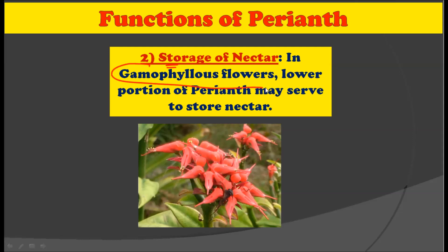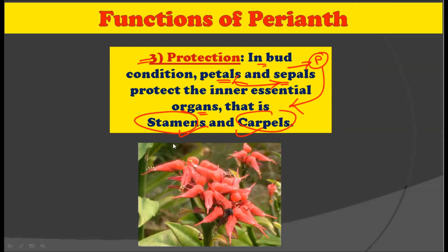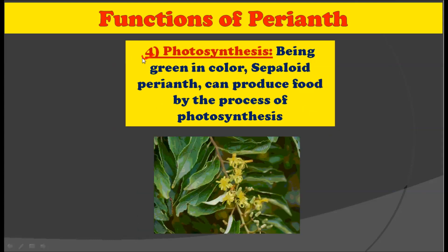The second function of the Perianth is storage of nectar. In gamophyllous flowers where the tepals are fused with each other, the lower part of the Perianth acts as a storehouse for storing nectar. The third function is protection — in bud condition, the petals and sepals together constitute the Perianth, and this Perianth encloses and protects the inner essential organs — that is, the stamens and carpels.